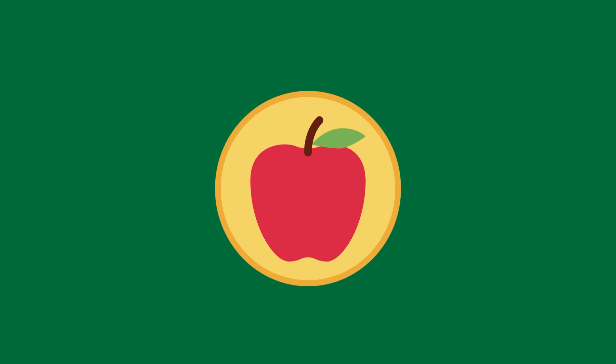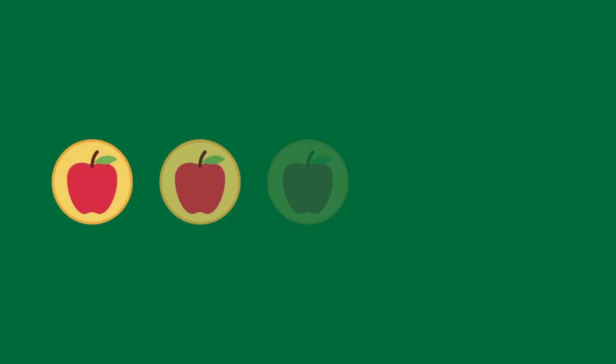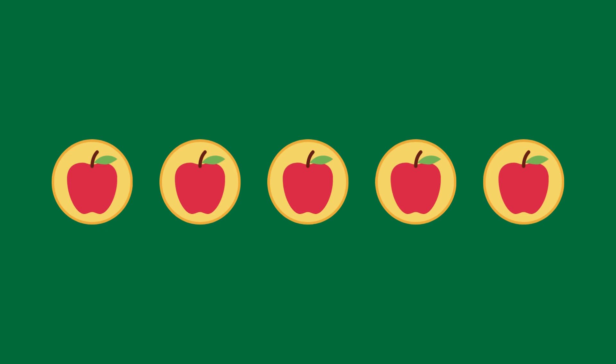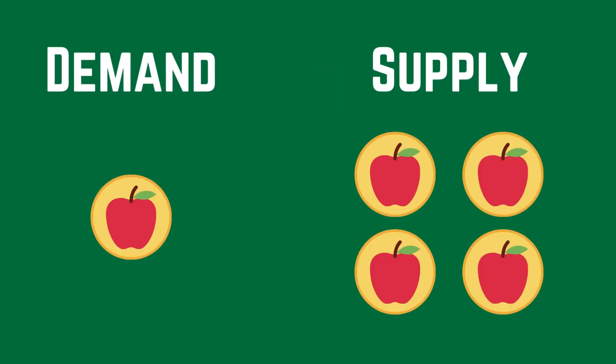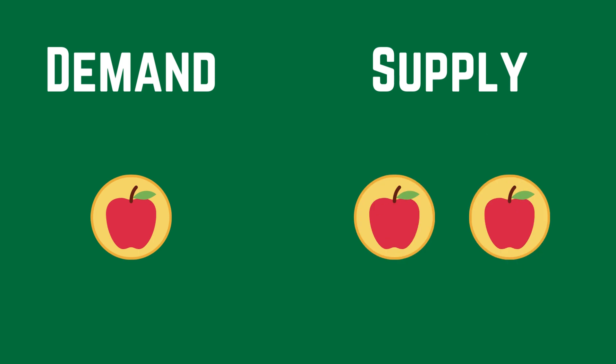Between demand and supply, we can more directly control the supply — this is where tokenomics plays an important role. Let's use apples as our example, calling it the apple token. Let's say we have five apple tokens with a constant demand of one. Our price is then one out of five. Now let's say we remove two apple tokens from the supply — our price is now one out of three. We've ensured a higher price by reducing supply in the market.